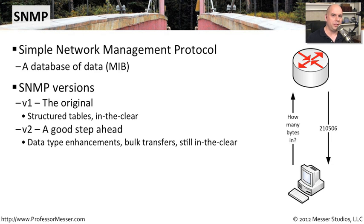Version 2 changed a few things. It added the ability to transfer data in bulk, so you could ask for a lot of different variables at one time and get all of those back in a single flow. One of the things that still was not in SNMP version 2, however, was that encryption and security we were looking for.